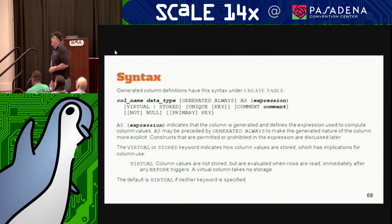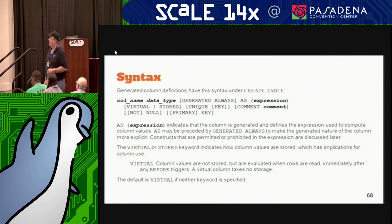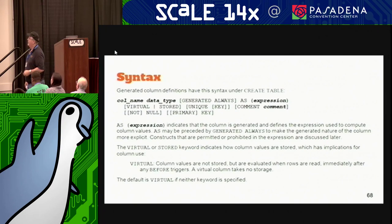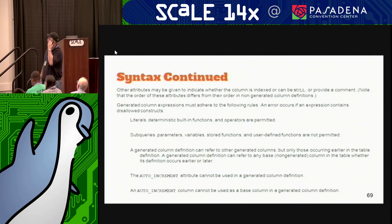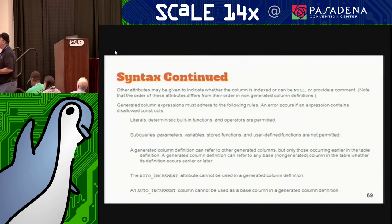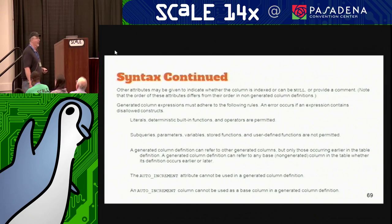Syntax for generated columns: column name, data type, virtual or stored. For UTF-8 JSON data, we want to have it as stored. It's nullable, and you can actually set it as a primary key. Right now, subqueries, variables, stored functions, and UDFs — user-defined functions — are not supported in generated column definitions. Also, auto-increment cannot be used in a generated column definition.